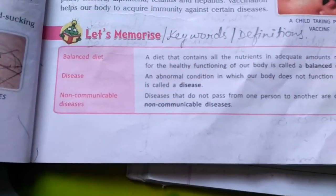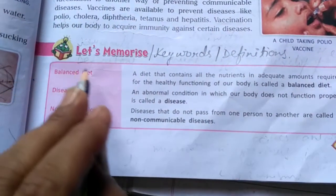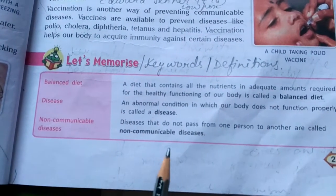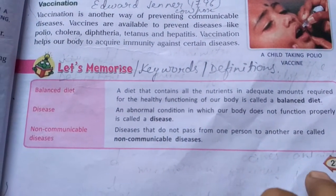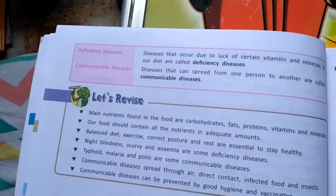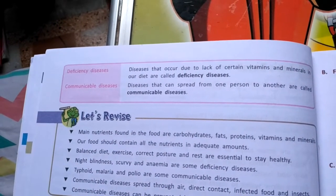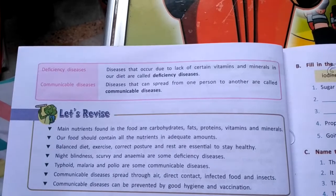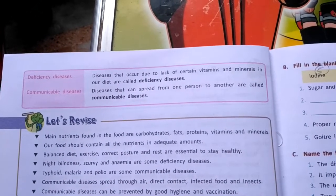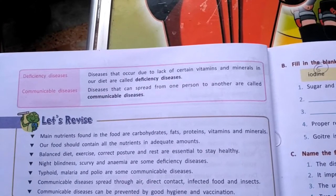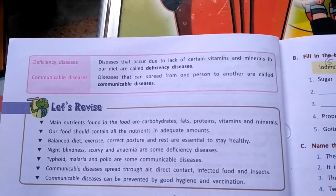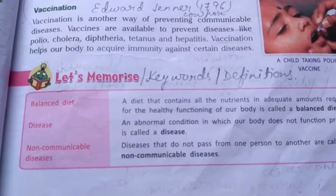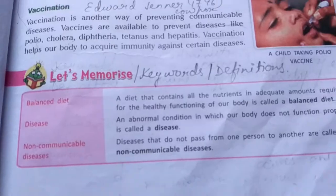There is also a keywords or 'Let's Memorize' section at the end of the chapter. Key terms to write in the notebook: deficiency diseases — diseases that occur due to shortage of certain vitamins and minerals in our diet; communicable diseases — diseases that can spread from one person to another; and balanced diet.